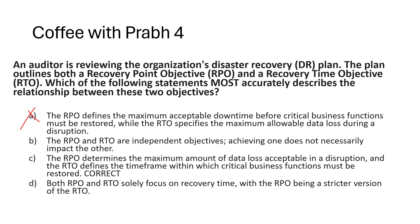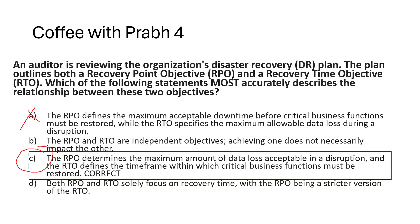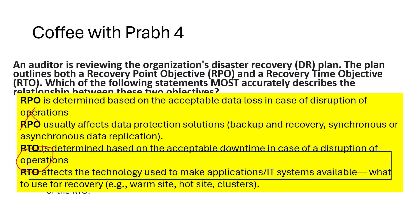Option C says RPO determines the maximum amount of data loss acceptable in a disruption, and RTO defines the timeframe within which critical business functions must be restored. Option D says both RPO and RTO solely focus on recovery time — that's not true. The answer is C. RPO determines acceptable data loss and affects data protection solutions — any question mentioning backup and recovery, synchronous or asynchronous replication is about RPO. RTO determines acceptable downtime and affects what technology is used for recovery.